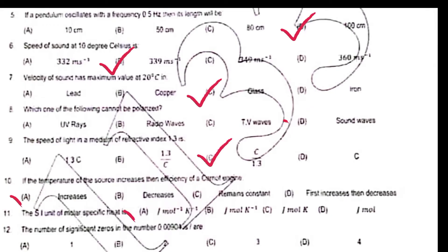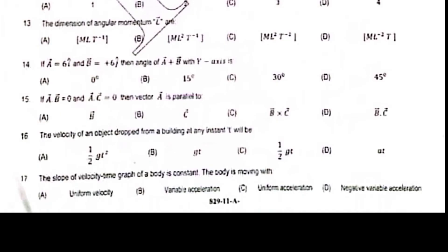The number of significant zeros in the number 0.00904 is 904. The dimension of angular momentum L are ML² T to the power minus 1.